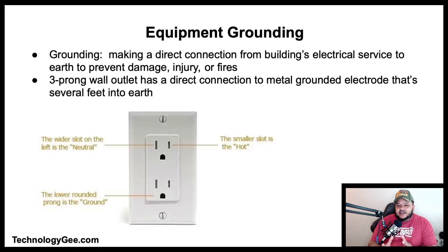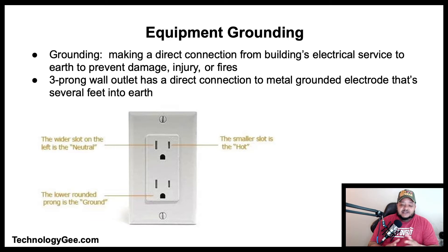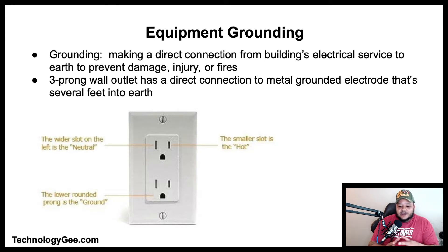Let's talk about equipment grounding. Grounding an electrical system simply means making a direct connection from the building's electrical service to the earth, so that dangerous voltage from line surges and lightning strikes will find its way to the earth instead of injuring people, damaging equipment, or causing a fire. Every three-pronged grounded outlet in a building has a direct connection to a metal grounding electrode that goes several feet into the earth.